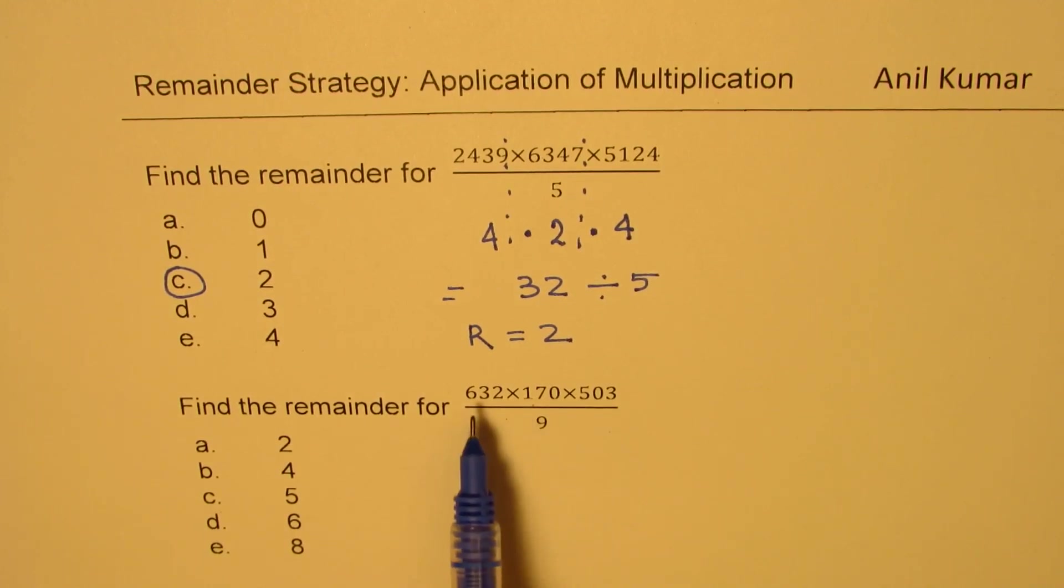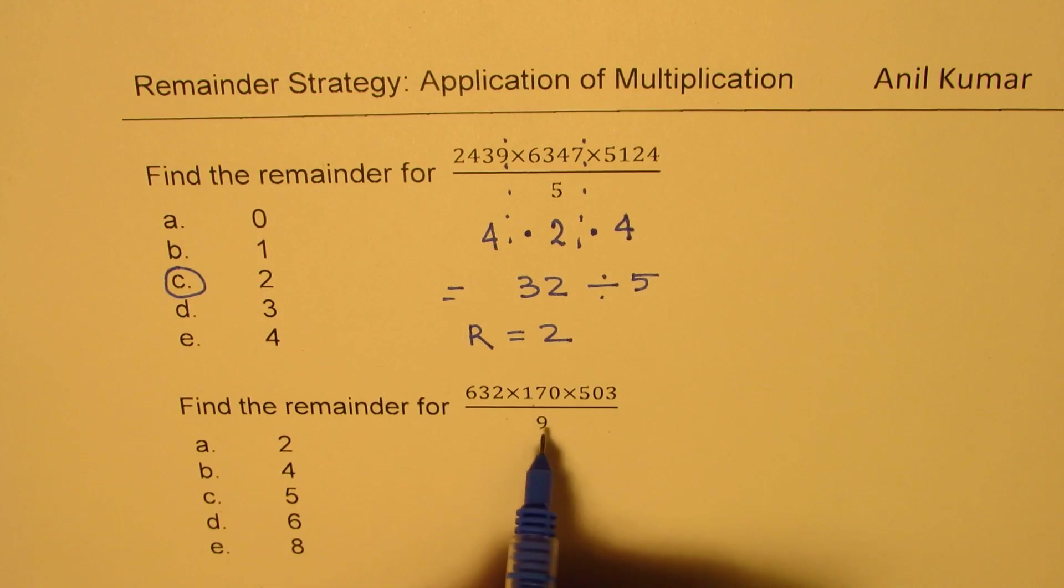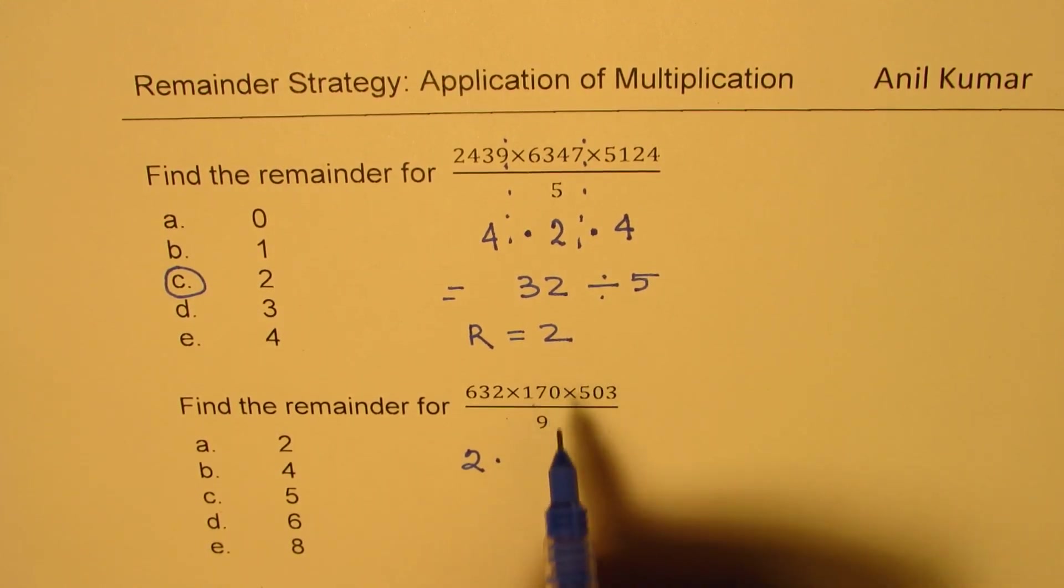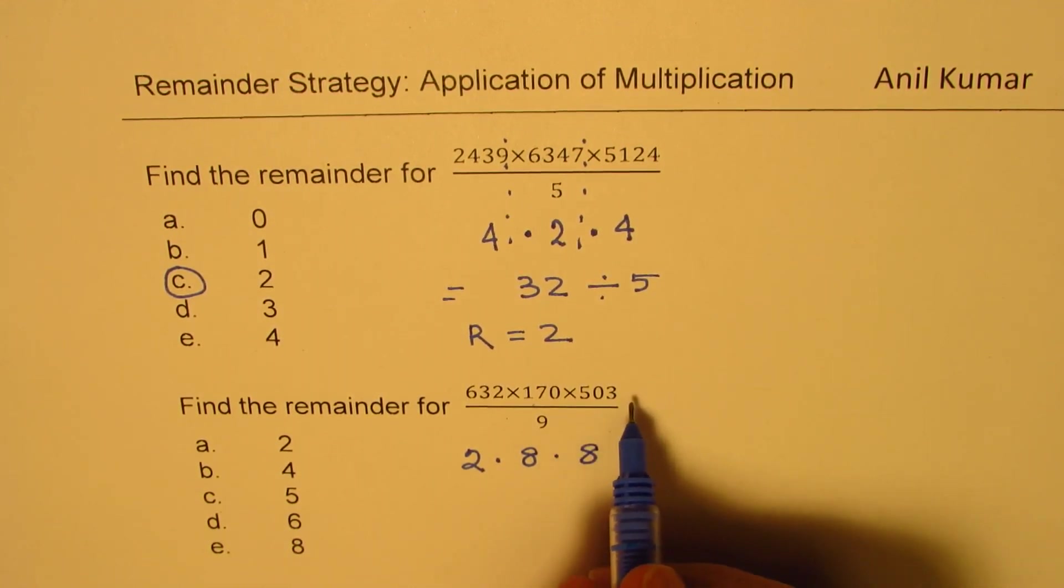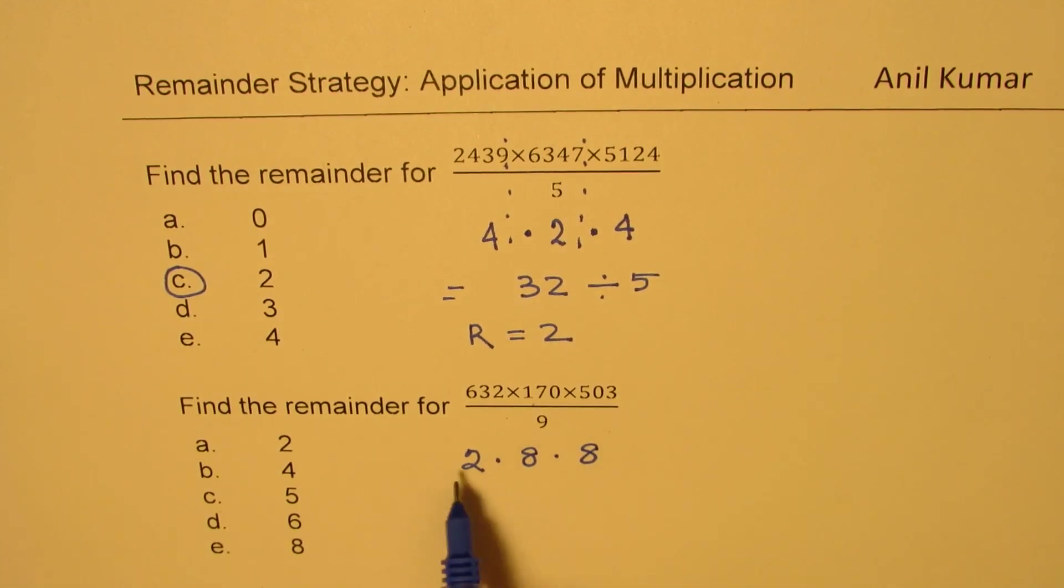Next one is dividing by 9. When you divide 632, 9 times 7 is 63. So, the remainder here is 2. For the second one, when you divide 170 by 9, 9 times 2 is 18, which is 1 more than 17. So, we get 8 as our remaining. 8, 0 is 80. Well, 81 goes. So, again, 8 remains. Here, 503 when divided by 9, 9 times 5 is 45. 45, we get 53. 9 times 6 is 54. So, again, we get 8. It is one short of multiple of 9. So, did you see how I calculated these remainders so easily? So, that is the way.